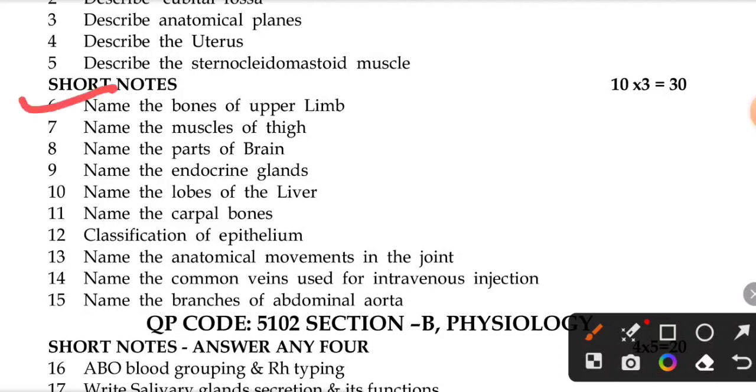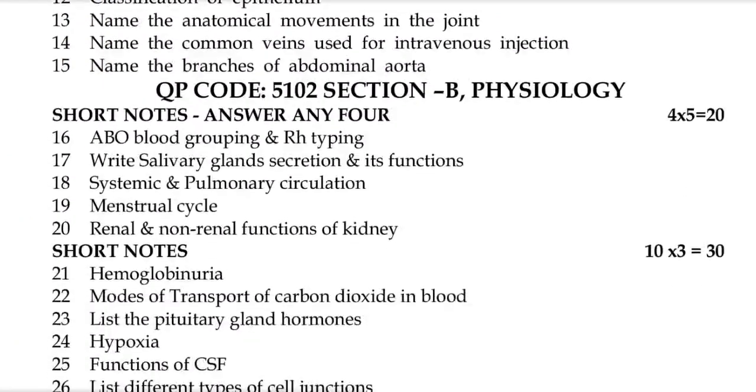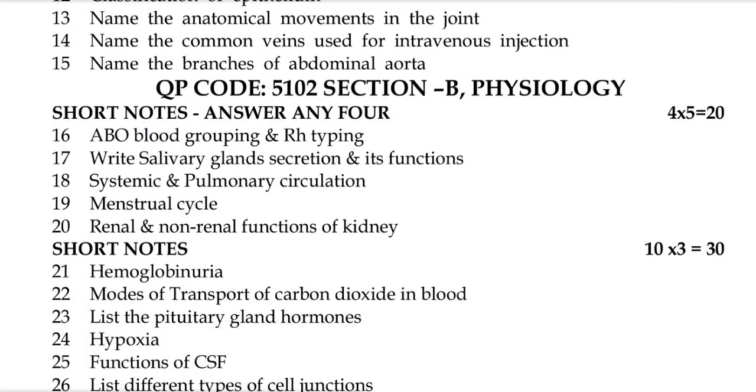Name the bones of upper limb. Name the muscles of the thigh. Name the parts of the brain. Name the endocrine glands. Name the lobes of the liver. Name the carpal bones. Classification of epithelium. Name the anatomical movements in the joint. Name the common veins used for intravenous injection. Name the branches of abdominal aorta.